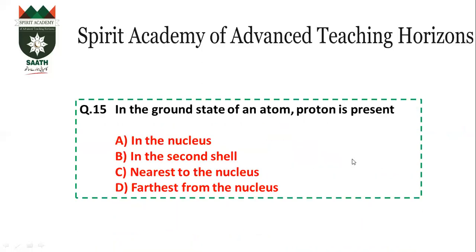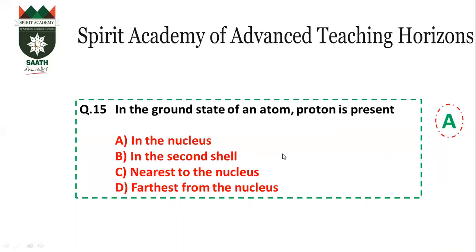Question number 15: In the ground state of an atom, where is the proton present? The proton is always present in the nucleus. So the answer is A — in the nucleus. If the question had asked about the electron, then the answer would be C — nearest to the nucleus.